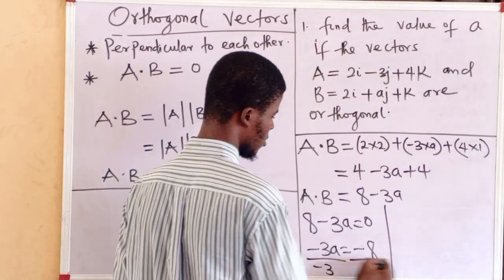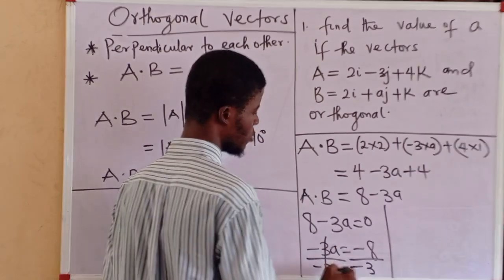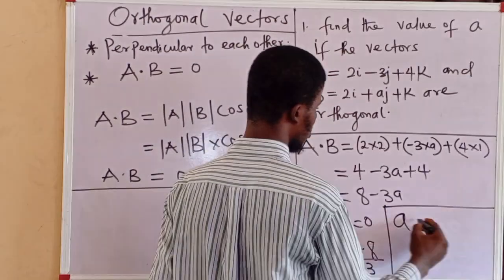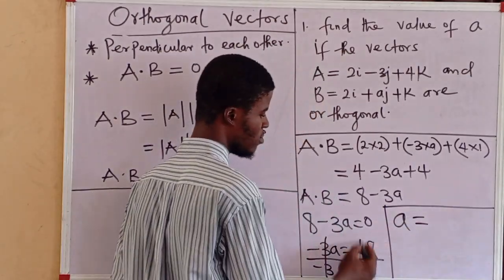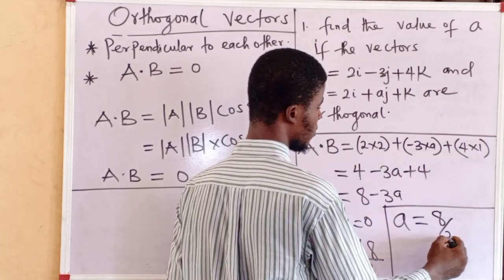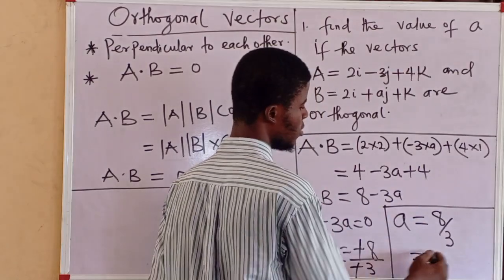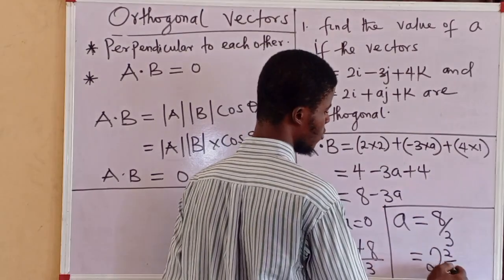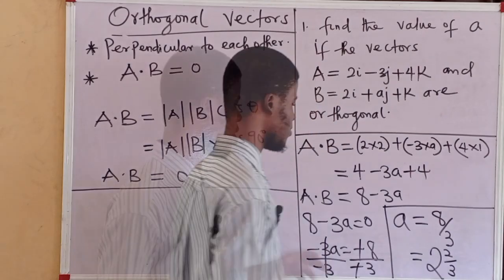Minus 3, minus 3. This will cancel out, A will be equal to minus 8 upon 3, which is the same thing as saying 2 whole number 2 over 3.